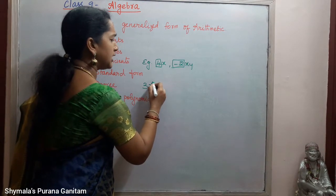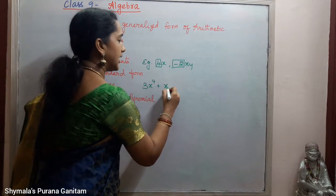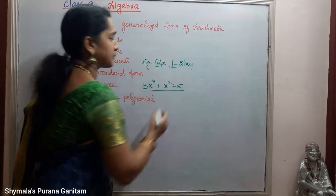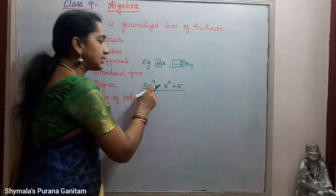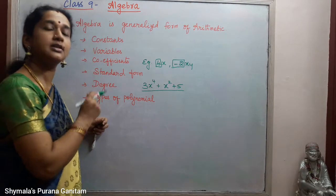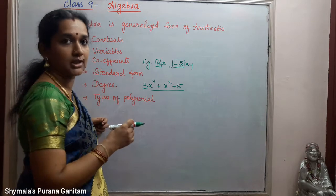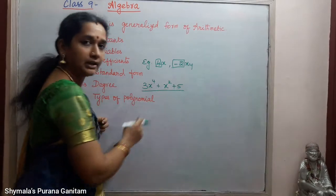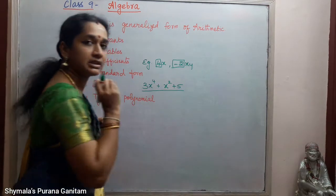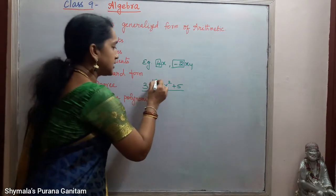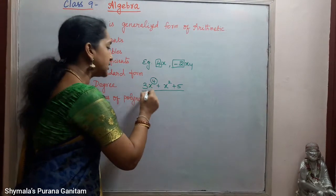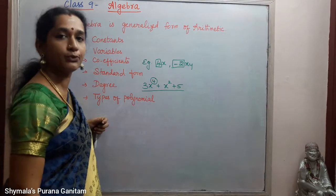For example, if we take 3x⁴ + x² + 5, this is an expression with 3 terms with one variable — only x variable is there. The highest power is 4, so the degree of this expression is 4.